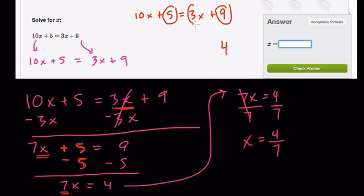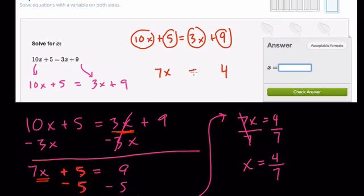And we're going to subtract the two variable terms, smaller from larger. And that's 7x. So you can mentally picture the difference between the two numbers and the difference between the variable terms.